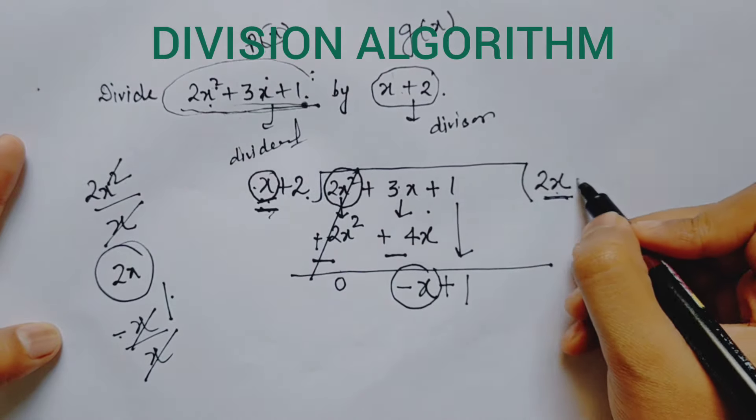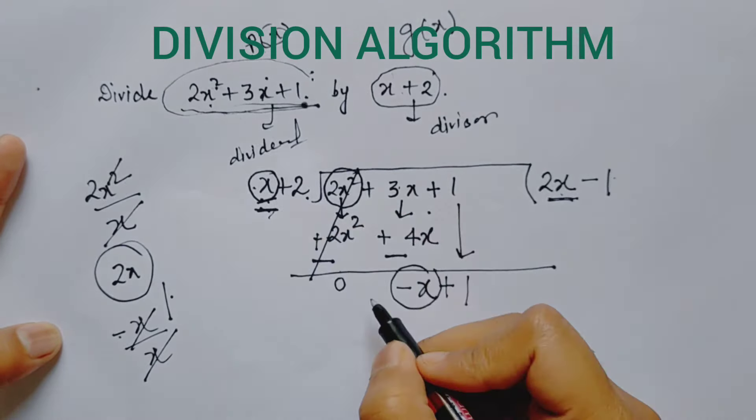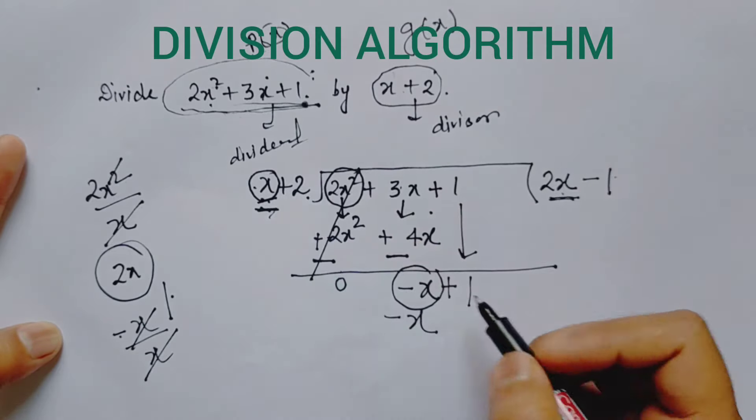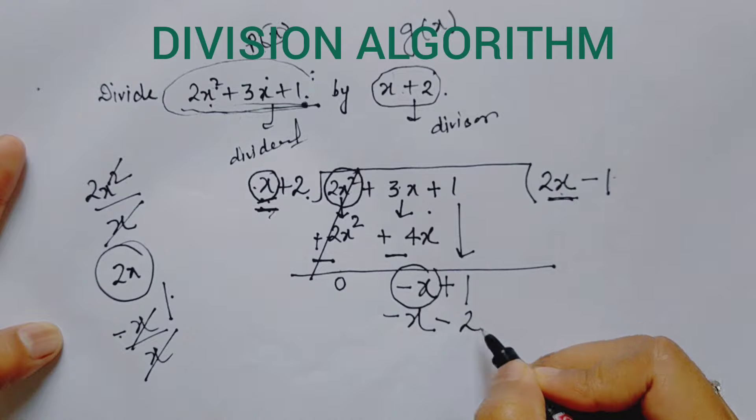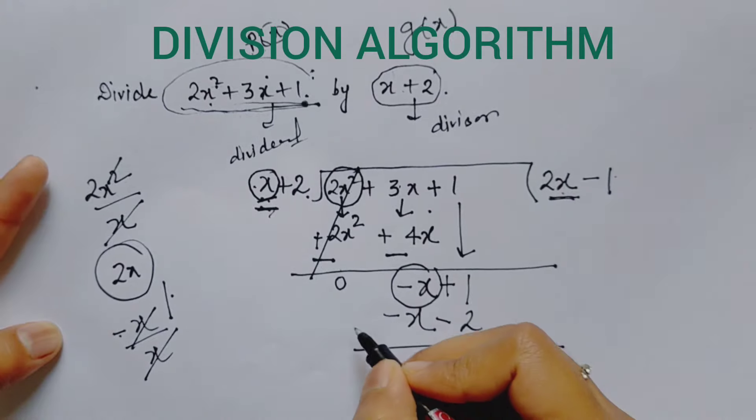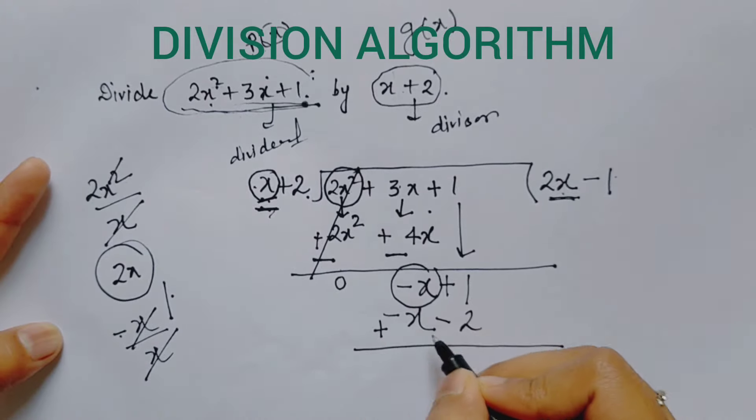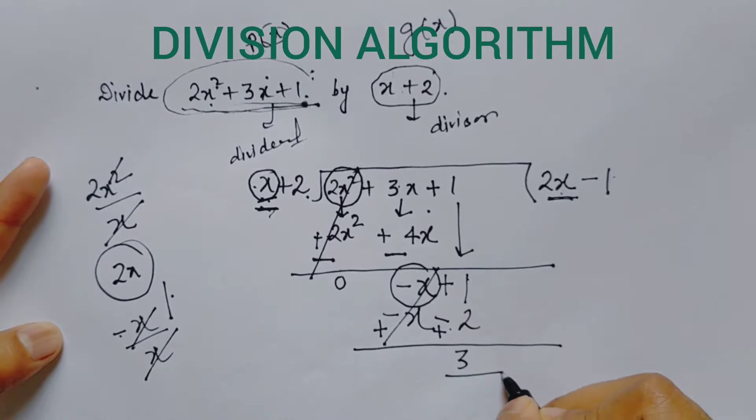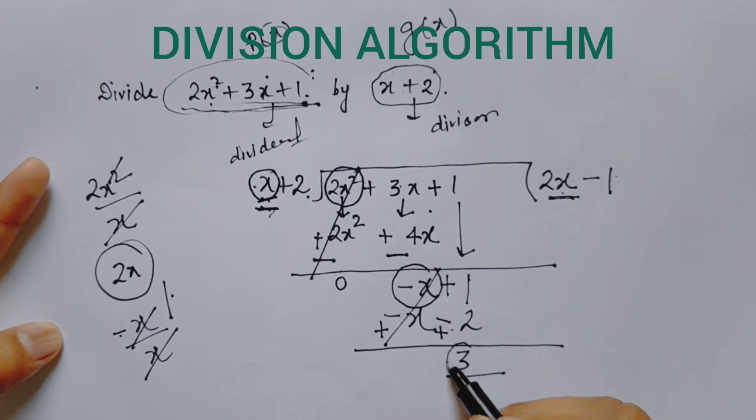Now again, the first term to be divided by the same term of the divisor. In rough, minus x upon positive x gives minus 1. So minus 1 is the next term of the quotient. Minus 1 times x is minus x, minus 1 times plus 2 is minus 2. Again I put a line and change their signs to plus.